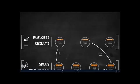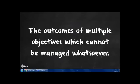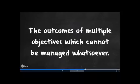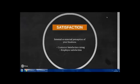The final one is business results and really this is where everything starts from a sales management point of view. This can be described as the outcomes of multiple objectives which cannot be managed whatsoever. So these results cannot be managed for themselves. One of these was satisfaction, which is essentially the internal or external perception of your business. Your customer satisfaction rating would be a great way of examining this. Employee satisfaction through a survey is also another good way.